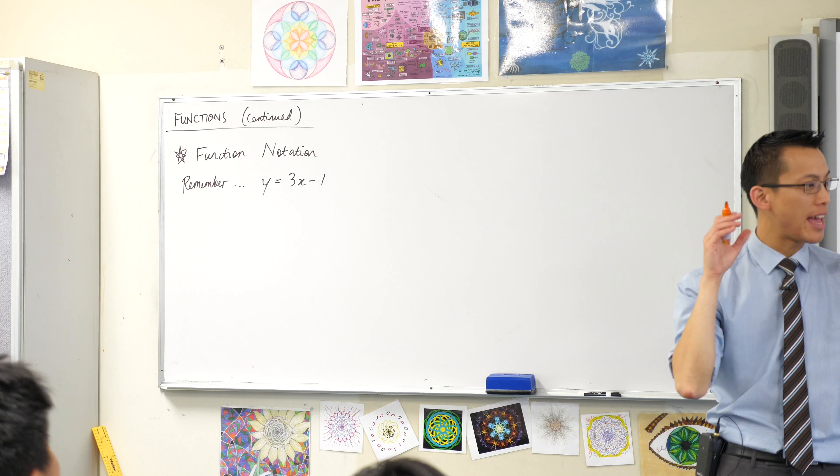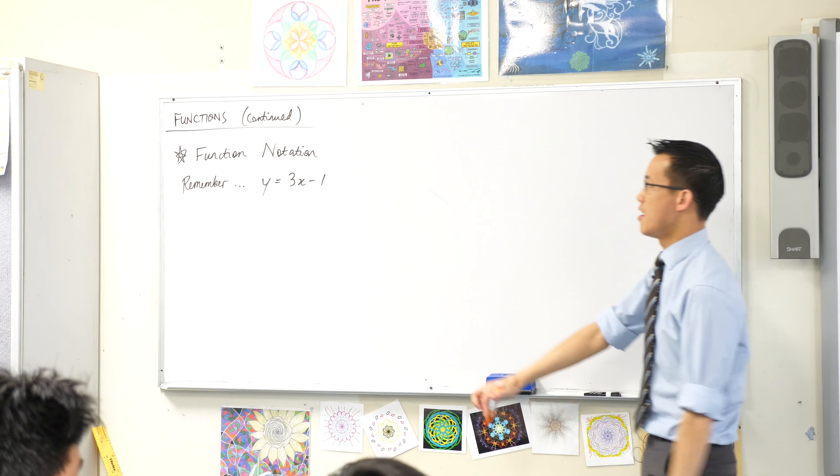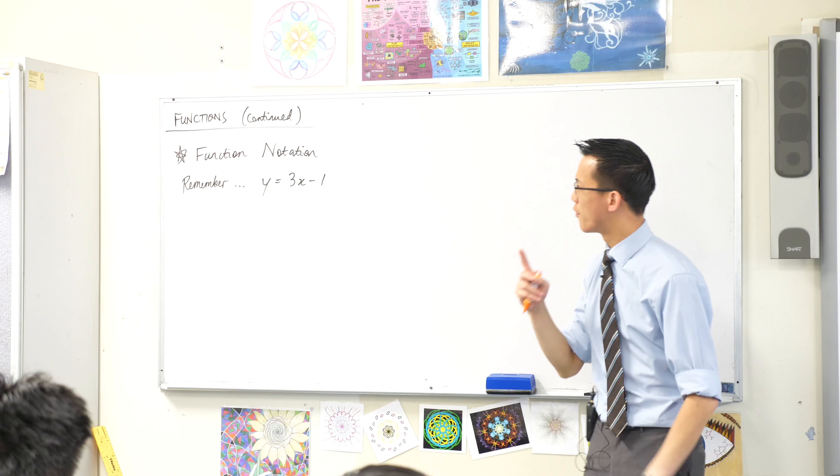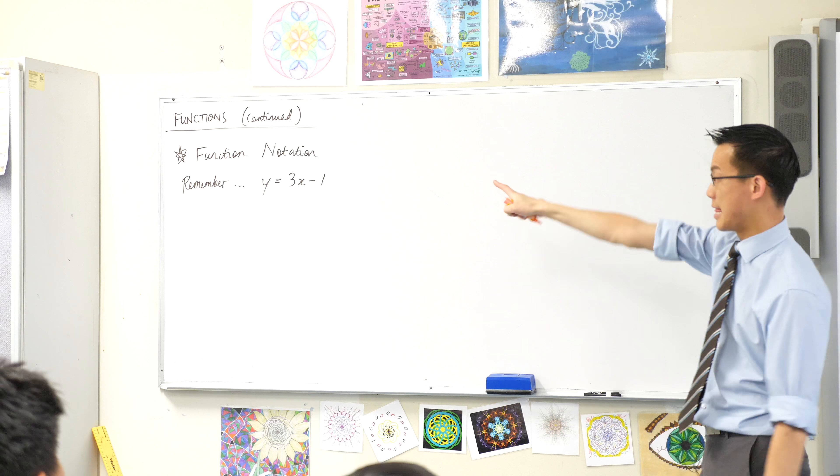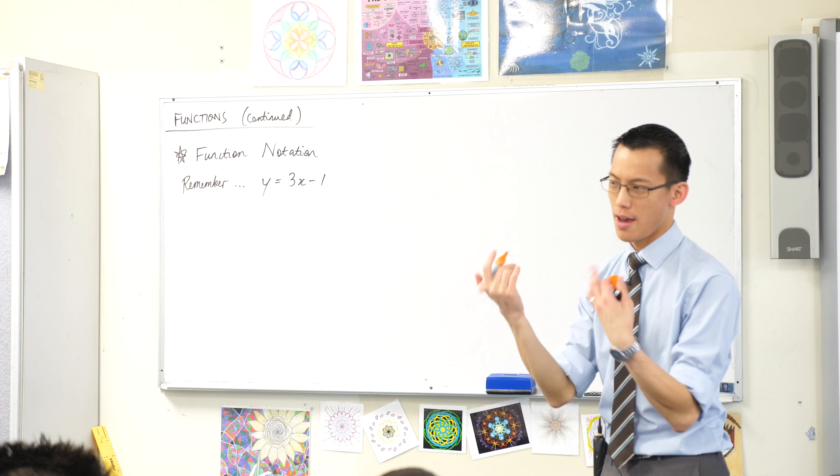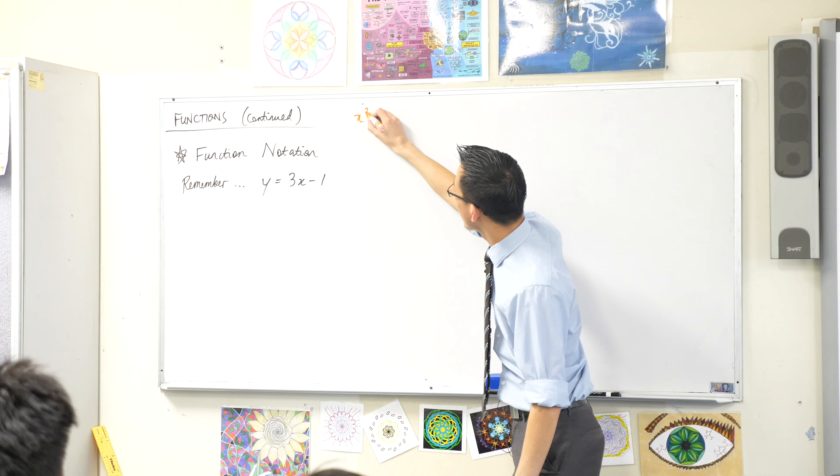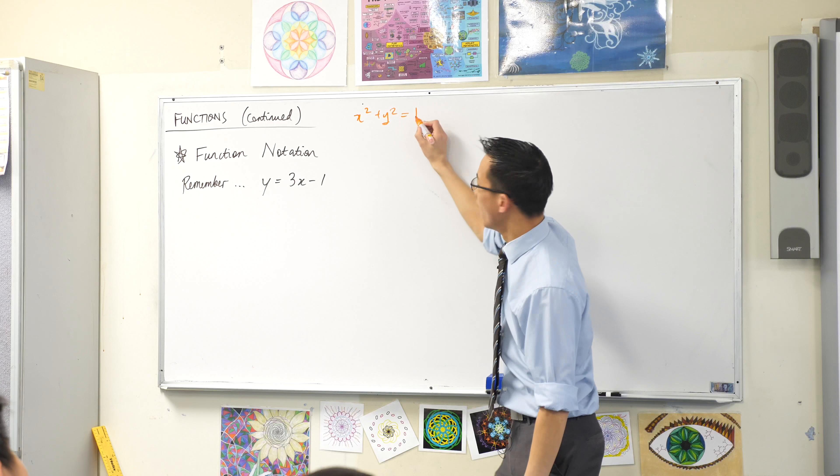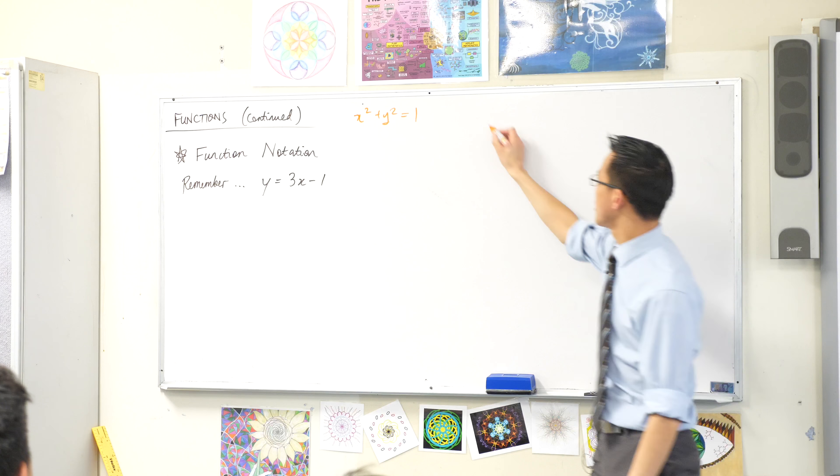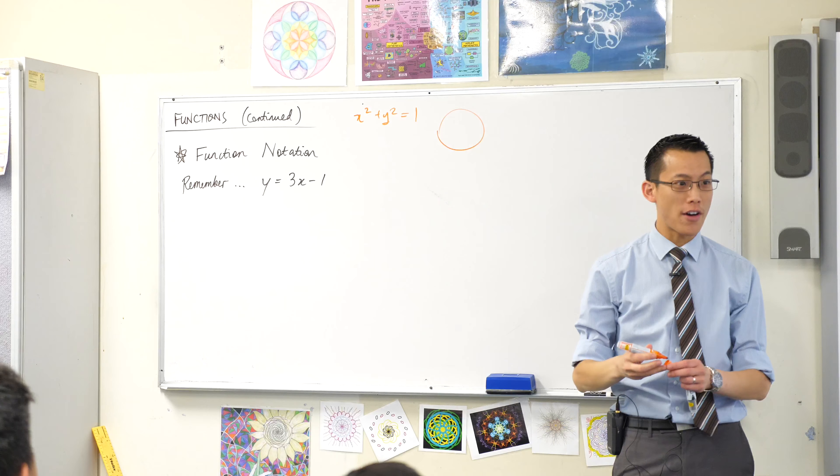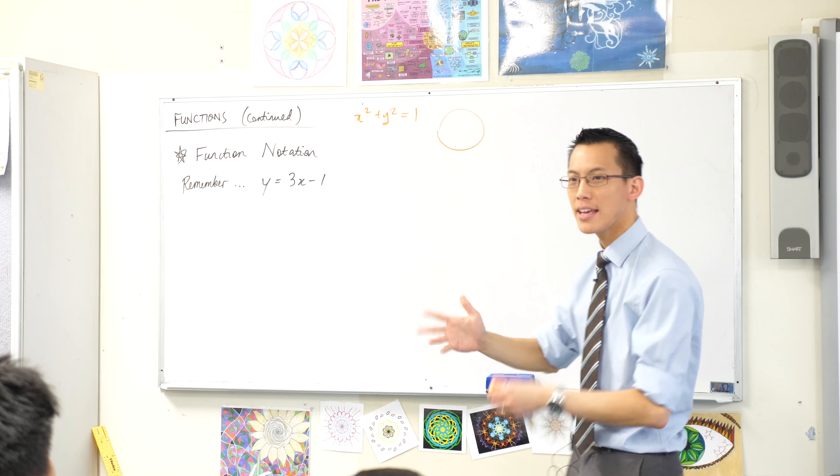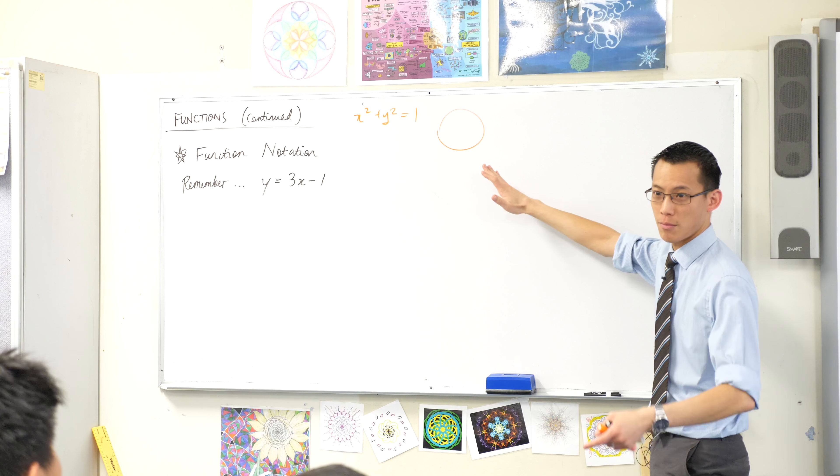We're still continuing to understand the fundamental idea of what is a function. Last time we introduced the idea of what's the difference between a function and just any kind of random equation that gives us a graph. For example, one of the not-functions that we had a look at was this guy. What kind of shape is it?